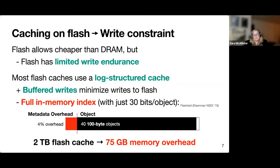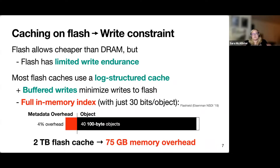On the other hand, you have to have a full in-memory index, and with just 30 bits per object this becomes really costly. With 30 bits per object and 100-byte objects, you have a 4% overhead, which across an entire two-terabyte flash cache leads to 75 gigabytes of memory overhead. And that's just for the metadata overhead — not including any in-memory cache or other metadata for tracking object popularity.